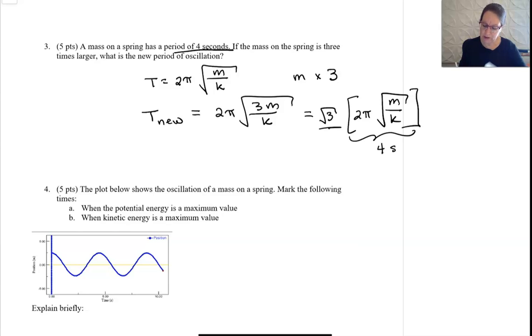This was my original period of 4 seconds, so when I take square root of 3 times 4, that gives me 6.9 seconds. That's my new period. It's not 3 times bigger because the 3 is under the square root.